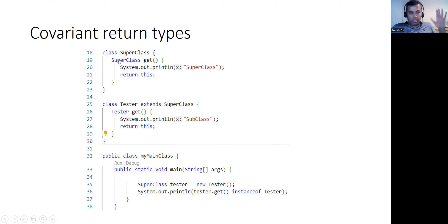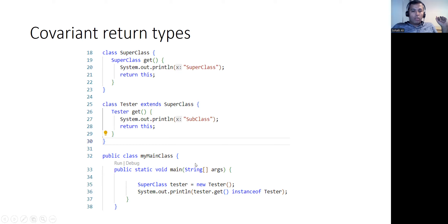So we have a base class with one method that returns the reference of the base class, and then the same method in the child class which gives you the reference of the child object. What you can do is declare a tester object which is of the type of the superclass, not the child class.